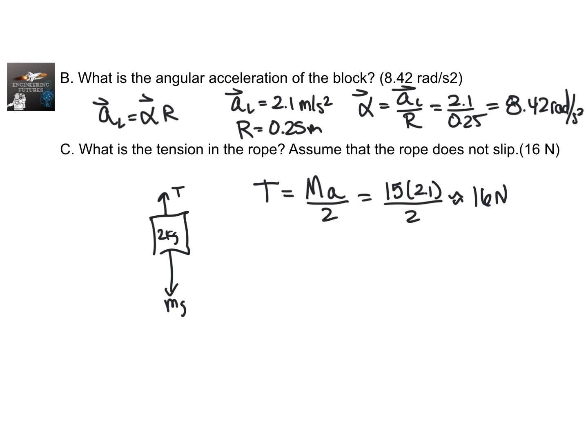You could also do it like this. You could also pull this out. You'd have negative tension plus mg equals mass of the block times a. Again, you're doing Newton's second law. So we can do it linearly as well. This tension would be equal to mg minus ma. So tension would be little mass times gravity minus acceleration. So that gives you 2 times 10 minus 2.1, and that still gives you 16 newtons. So there's different ways you can find the tension.